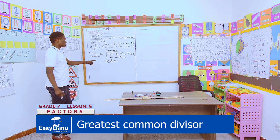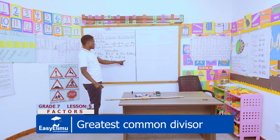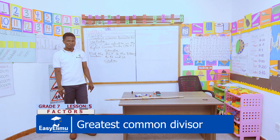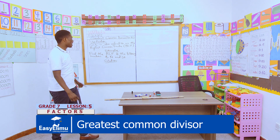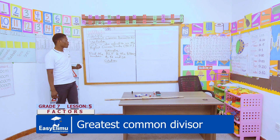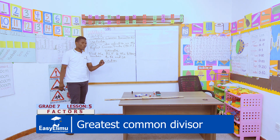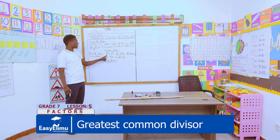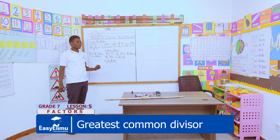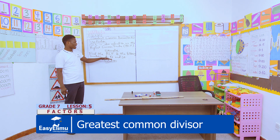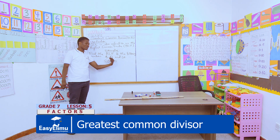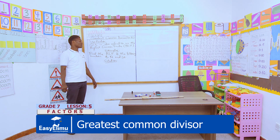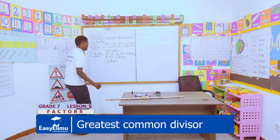Solution. Looking at our numbers, the three numbers are composite numbers — they have more than two factors. So the first step is to highlight all the possible factors of each and every number. Then from there we pick the highest common factors, common in the sense that it is a factor of the first, second, and third number, and it is the highest.